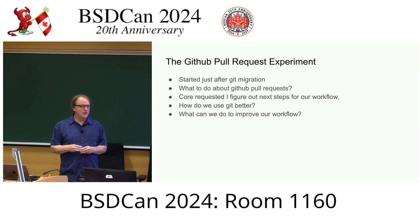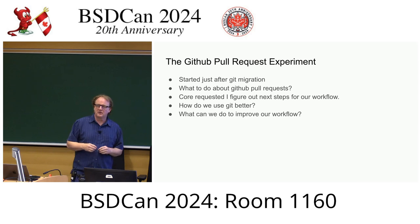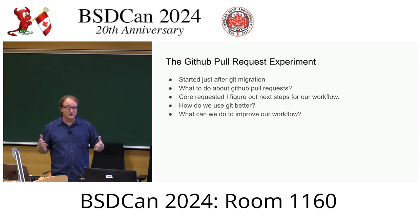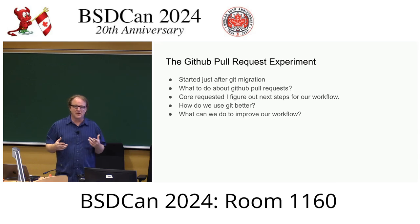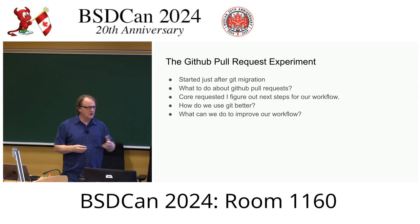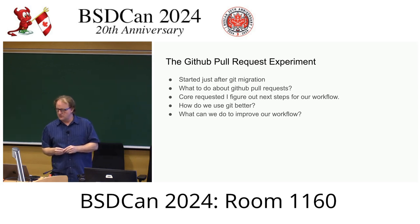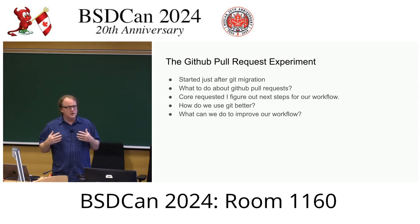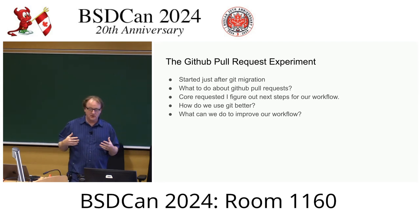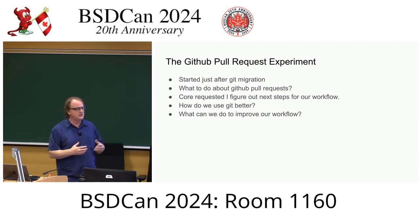At one point, the core team asked me to focus on next steps for our Git process. The whole reason we switched to Git was so that we could do new things, and if we just kept doing the same thing, that's a lot of effort for not a whole lot of gain — although Git is a much nicer tool than Subversion. So this is part of that: how we can use Git better, how we can improve our workflow, how we can make it easier, particularly for casual contributors, to submit patches.